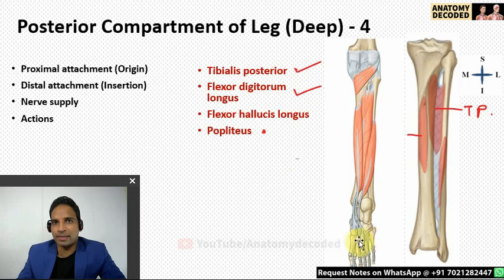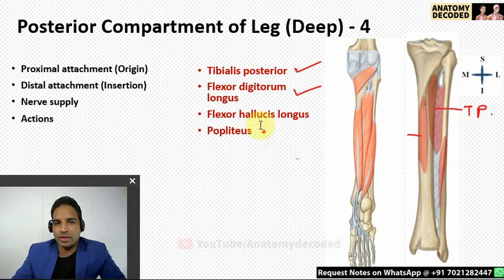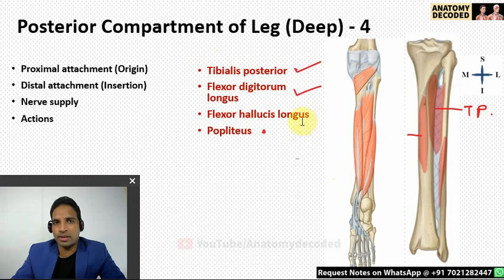The distal attachment of tibialis posterior is primarily along the navicular tuberosity. It then sends slips to all tarsal bones except the talus, and finally attaches to the bases of the middle three metatarsal bones. Flexor digitorum longus and flexor hallucis longus attach to the plantar surface of the distal phalanges — corresponding to extensors on the dorsal surface. Popliteus attaches to the triangular area on the posterior surface of the tibia above the soleal line. Its action is unlocking of the knee joint.